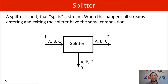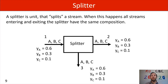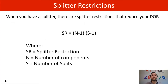In this example, we have streams one, two, and three with components A, B, and C. Since we're a splitter, stream one has a mole fraction of 0.6 for A, 0.3 for B, and 0.1 for C. Therefore, streams two and three will have the same compositions. When you have a splitter, there are changes to your material balance called splitter restrictions, which reduce our degrees of freedom. The formula is: SR equals (N minus 1) times (S minus 1), where N is the number of components entering the splitter and S is the number of splits.